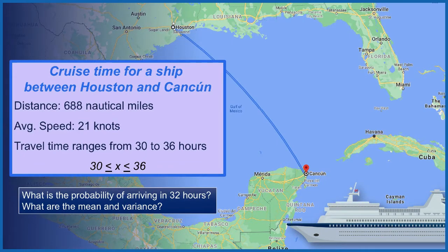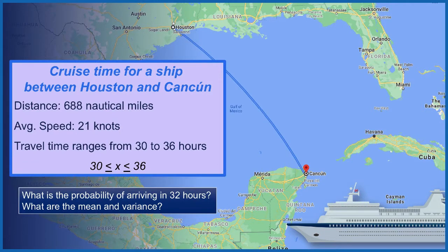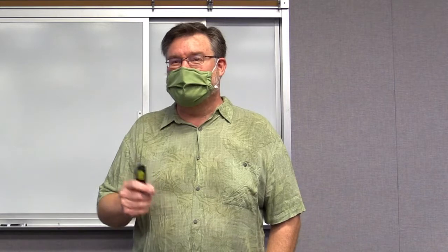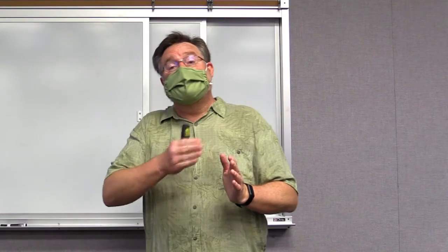So here's our first example. There's a cruise that runs from Houston to Cancun. And I've discovered a lot about cruising coming up with this example. I now know that it is 688 nautical miles between Houston and Cancun. I also learned that cruise ships on the average travel at 21 nautical miles per hour, or 21 knots, which is equivalent to about 24 miles per hour on a land equivalent. I made up this uniform probability distribution in which the shortest time that you might get to Cancun would be 30 hours, and the longest time would be 36 hours. But the probability of arriving at any interval within that timeframe is equal.